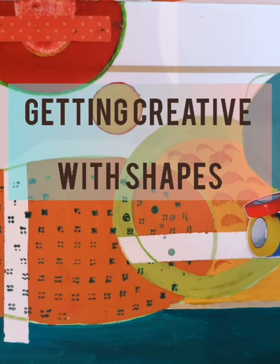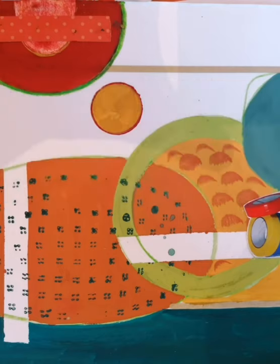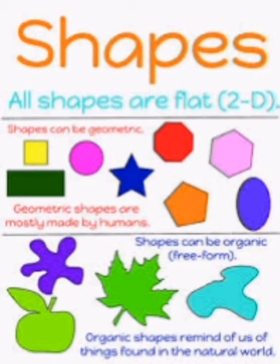Hello everybody, and today we're going to be creating some work based on shapes and the shapes that are around us. We can see here some geometric shapes, like squares and rectangles, triangles, hexagons, perfect circles. And then we have organic shapes that are more irregular and natural, more found in nature. I have here a collection of abstract work that is kind of based around shapes.